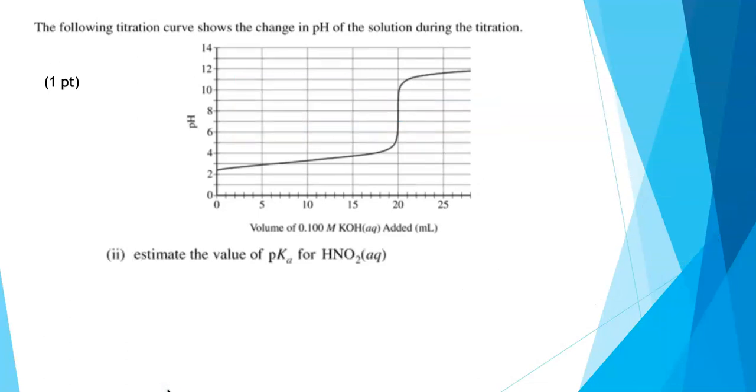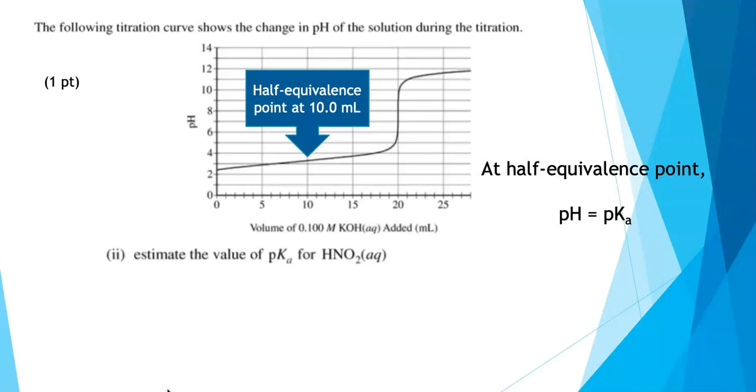The titration curve also asks us to estimate the value of the pKa for HNO2. This also was one point. In order to answer this question, you need to recall that at the half equivalence point, the pH will equal the pKa of that weak acid. We know the equivalence point was at 20 mils, so the half equivalence point is at 10 mils of KOH. We just need to read over on the graph and find the pH of the solution when 10 mils of KOH had been added, and it's about 3.4. The pKa of the acid is 3.4. That's literally all you had to write down. You didn't have to write down how you got it.